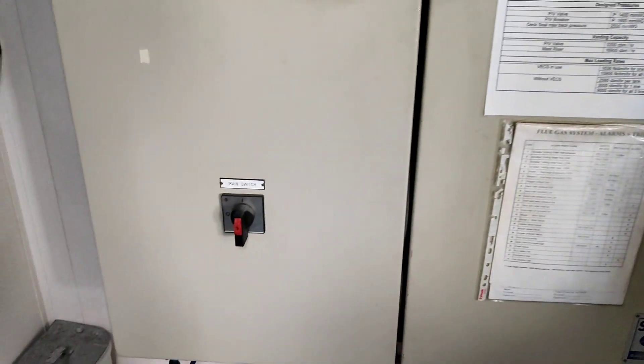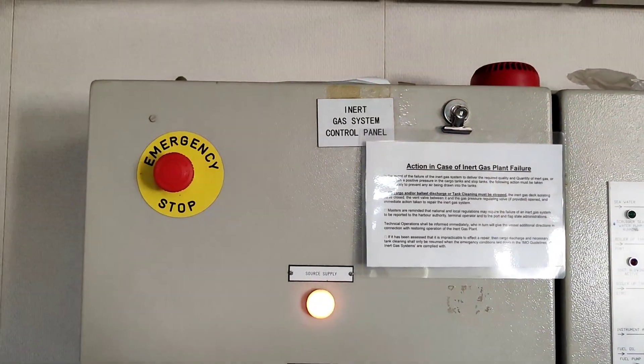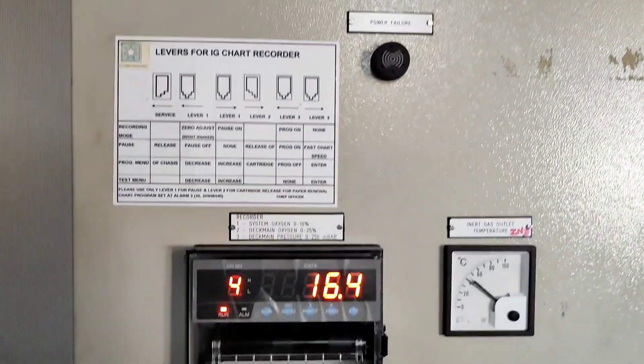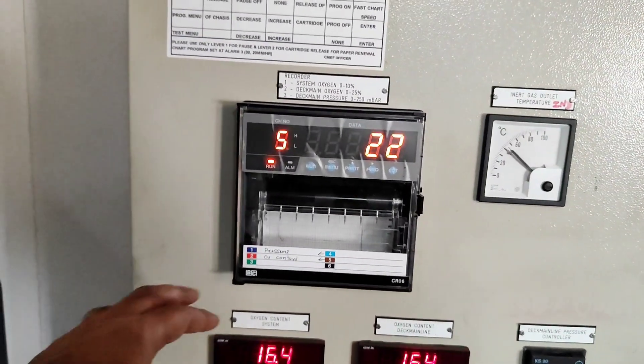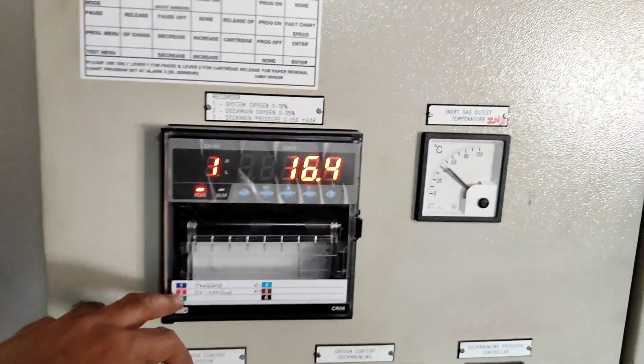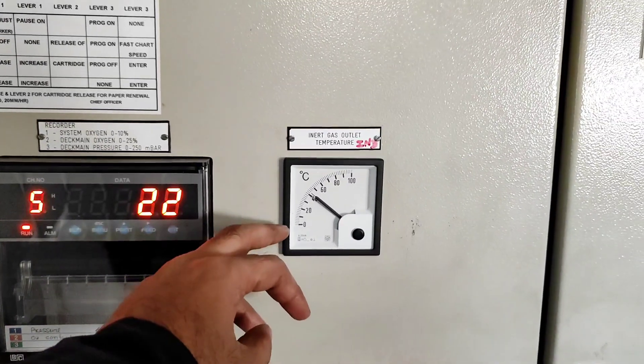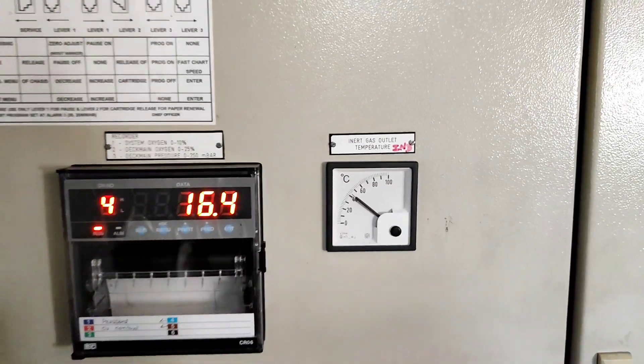This is the main switch, here on top you will find emergency stop, source supply power failure, and then you have a recorder which records your oxygen and deck pressure temperature. This is the inert gas outlet temperature, it shows whatever IG which is coming, how much temperature it is. This is a setting also that it should not exceed that temperature.